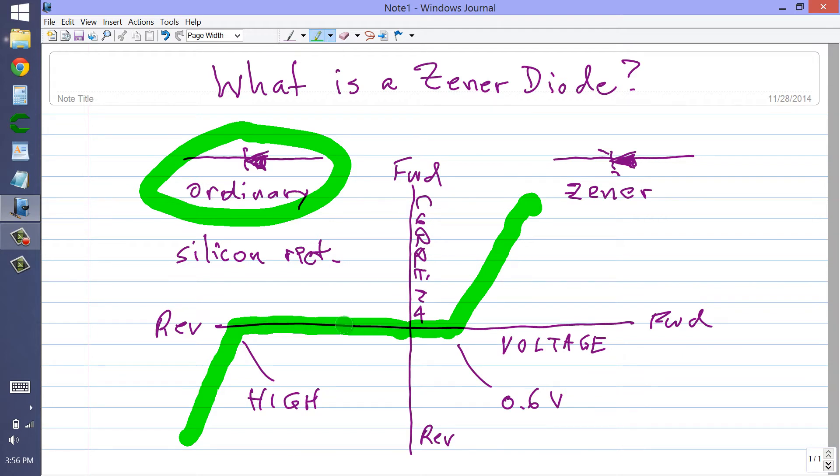Of course, what you're looking at is a graph of voltage versus current, forward voltage going off towards the right, reverse voltage going off towards the left, forward current going up, reverse current going down.